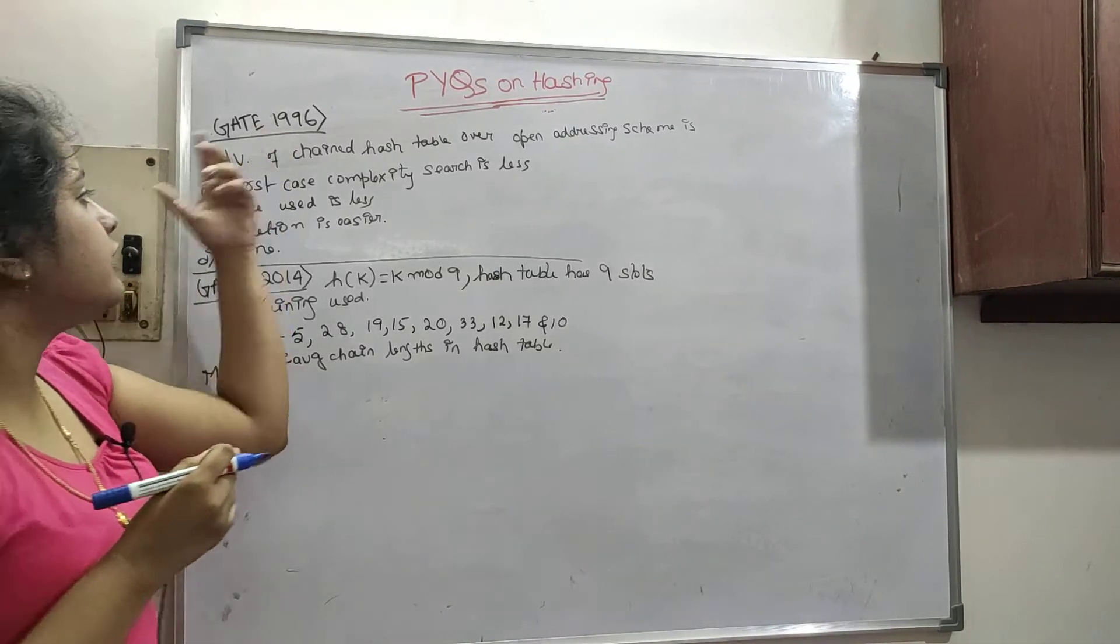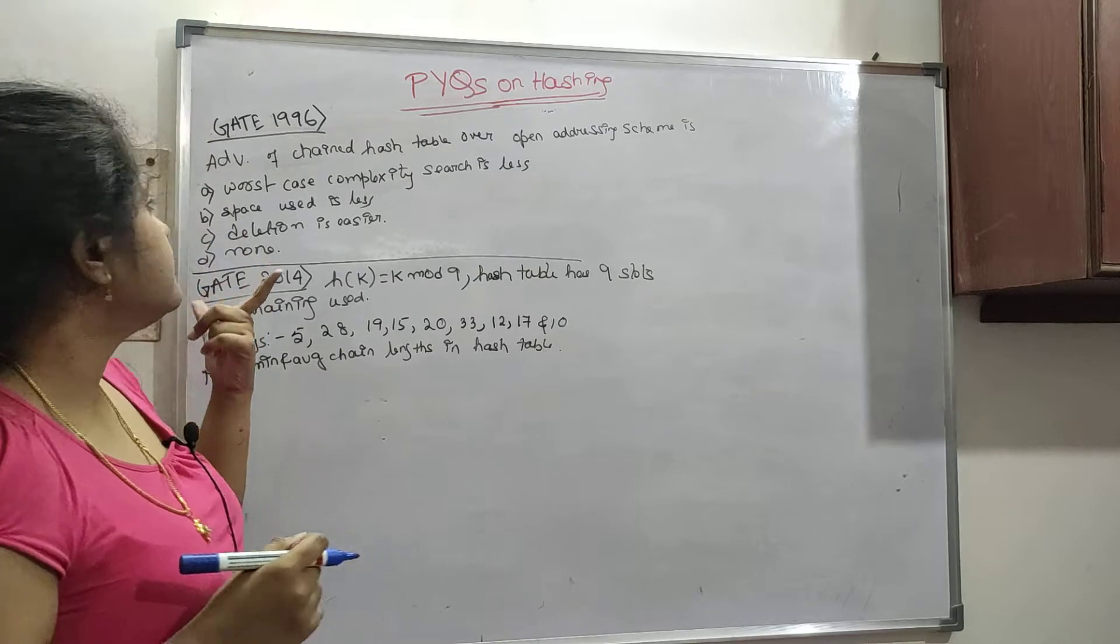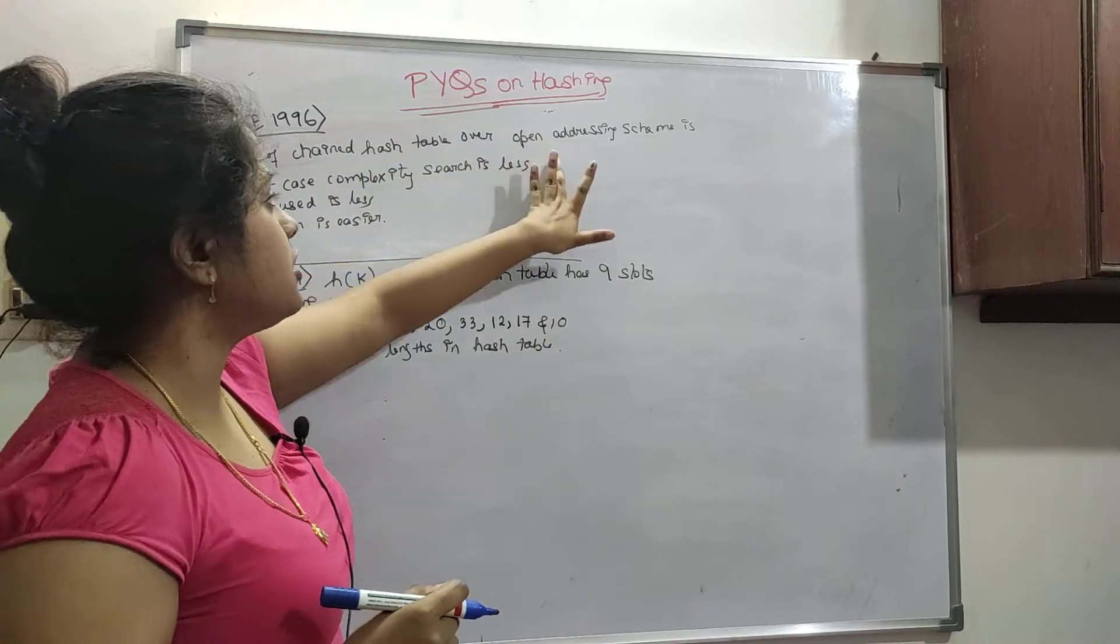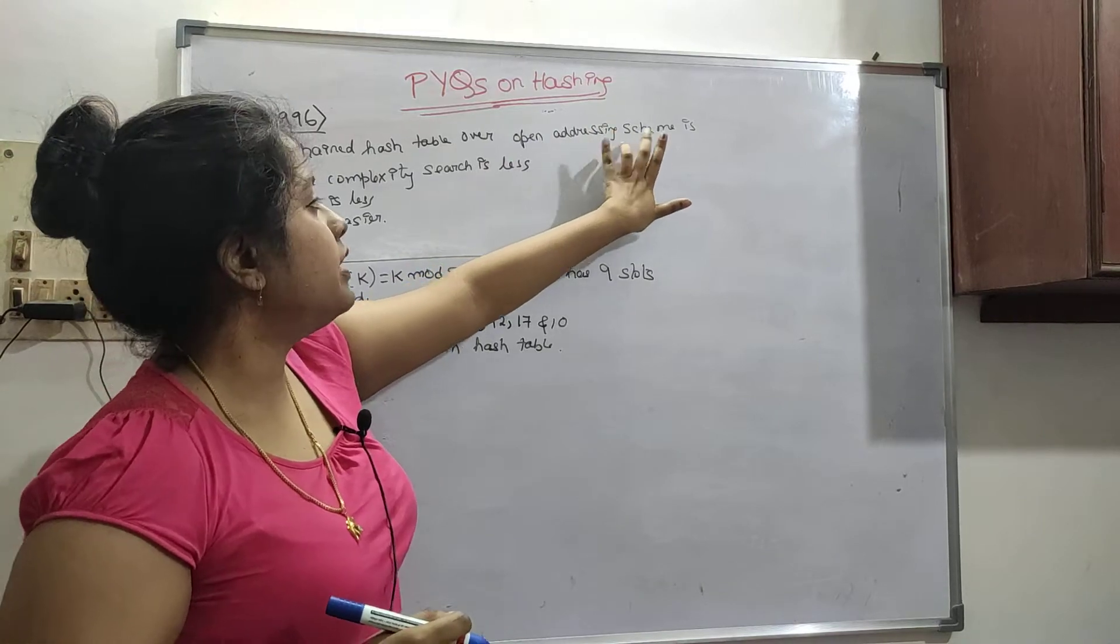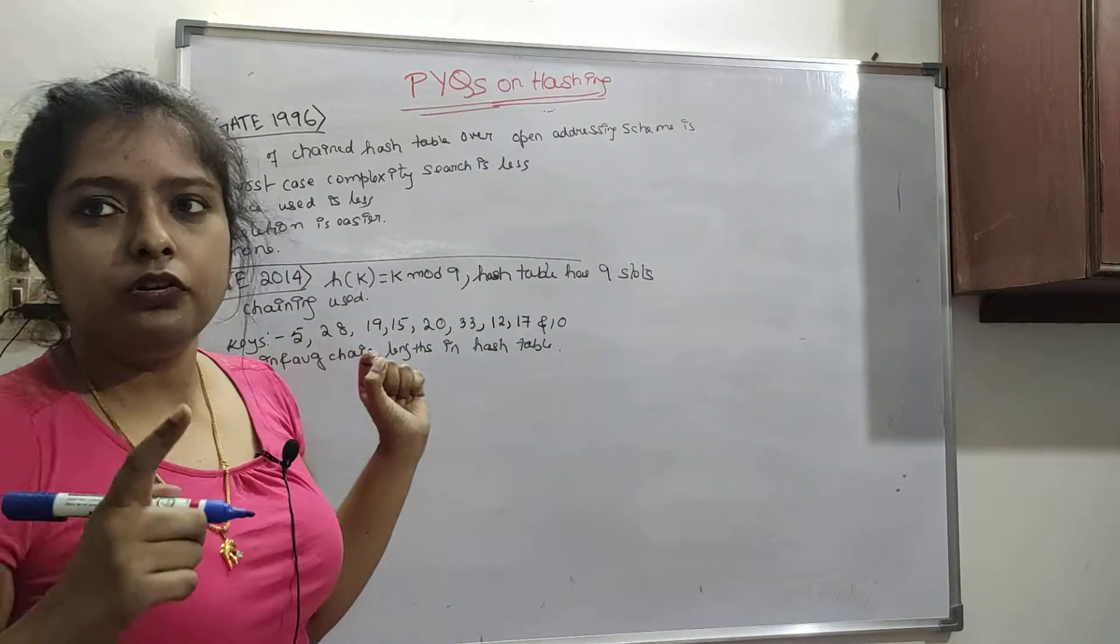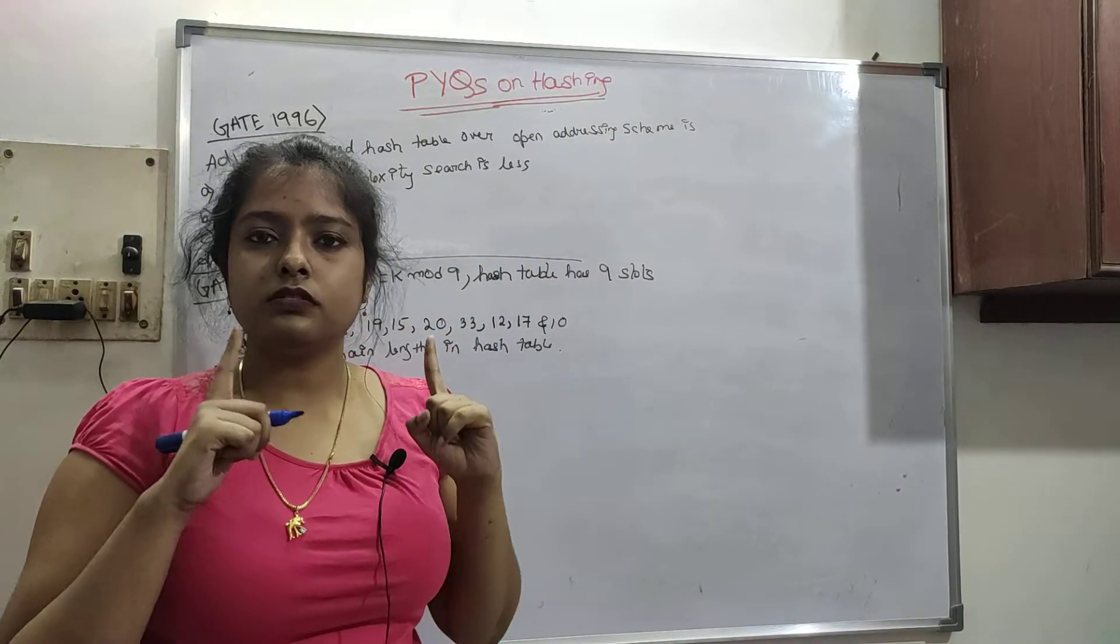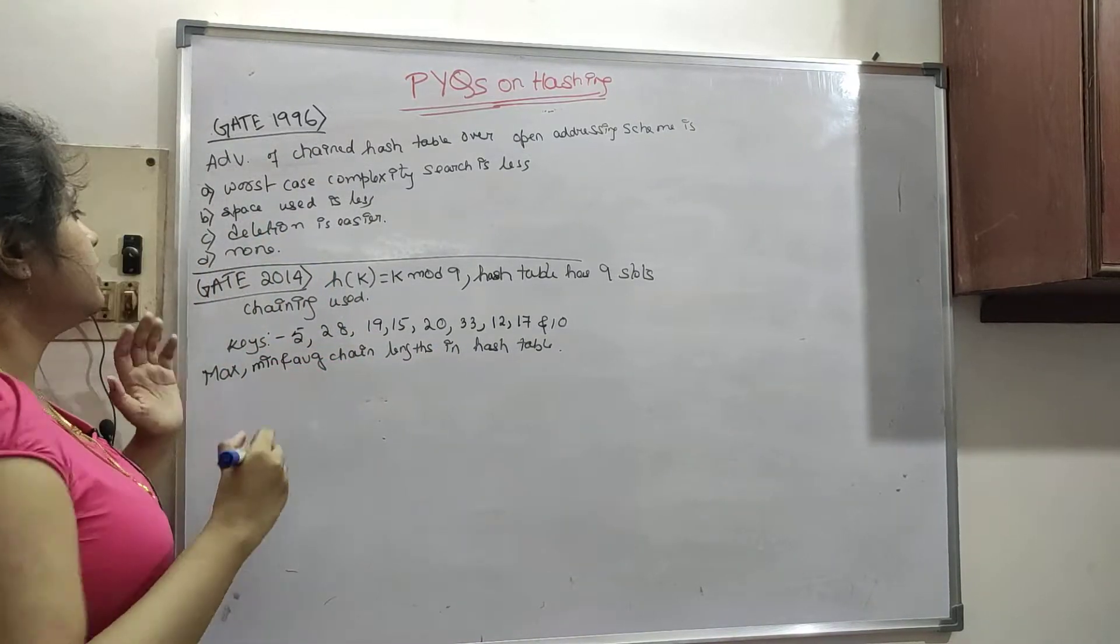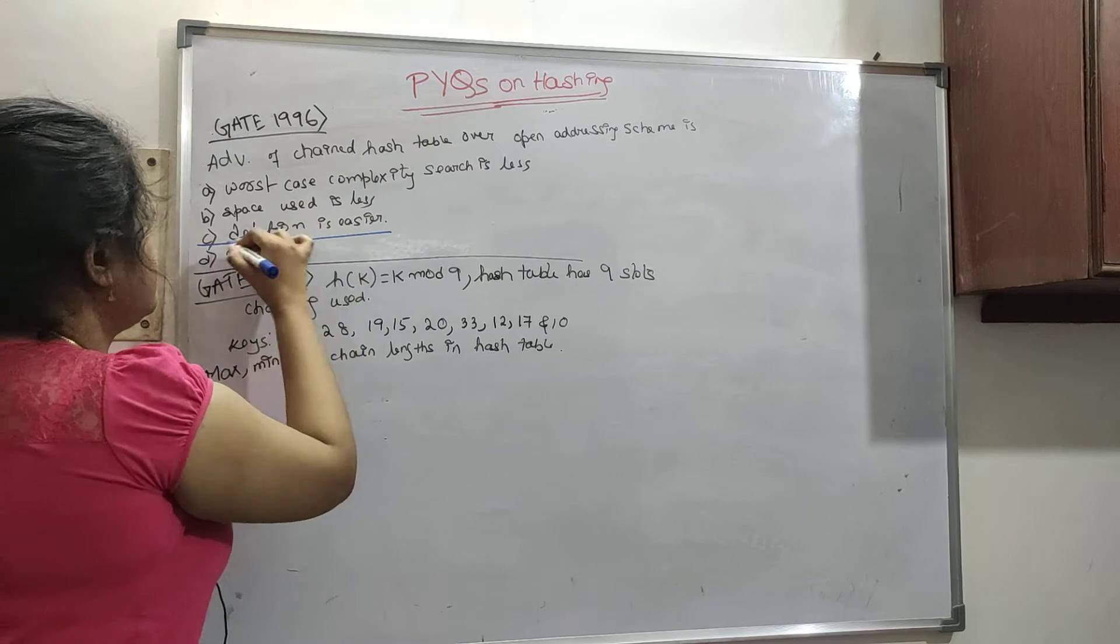Let us say this question. GATE 1996, this is based on chaining. Advantages of chained hash function over open addressing scheme. I have already told you average deletion time is theta of 1 which is constant time, that is the advantage. So basically this is our answer.